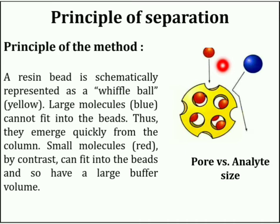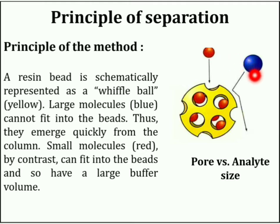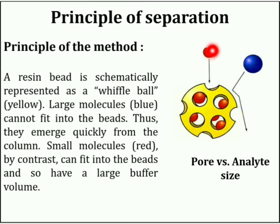When a sample is supplied, it may contain variable size molecules. Large molecules, like the blue one shown, cannot fit into the beds and thus emerge quickly from the column. Small molecules, like the red one, can fit into the beds and therefore have a larger buffer volume.